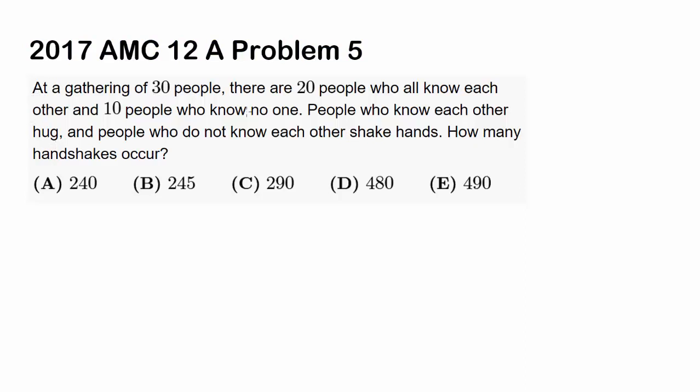At a gathering of 30 people, there are 20 people who know each other and 10 people who do not know anyone. People who know each other hug and people who do not know each other shake hands. How many handshakes occur?